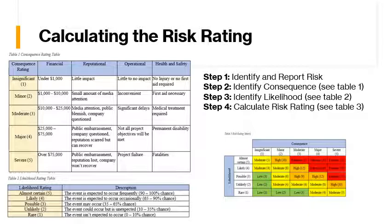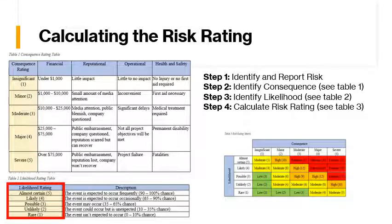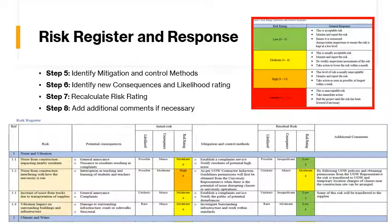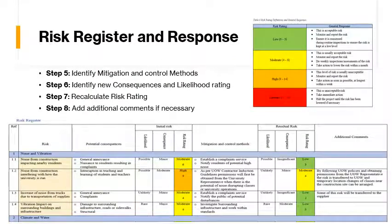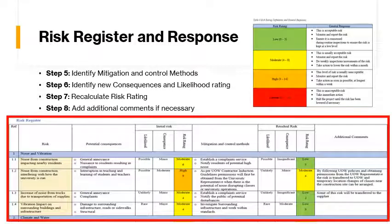The risk rating is calculated by multiplying the identified consequence rating with the likelihood rating. The higher the score, the more urgent the risk is. This table shows the general response to different levels of risk. The Risk Register demonstrates risk ratings for identified risks before and after mitigation actions. The Risk Management Framework is designed to be easy to follow and to add new risks to if they arise.